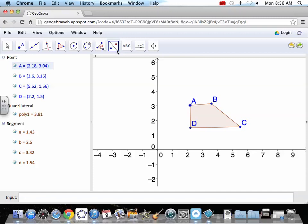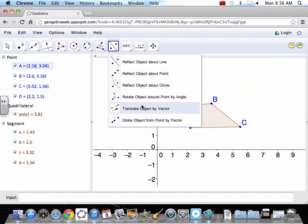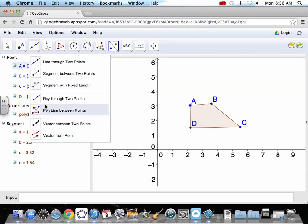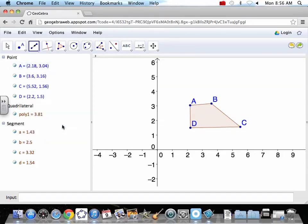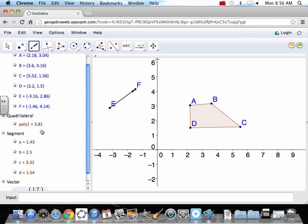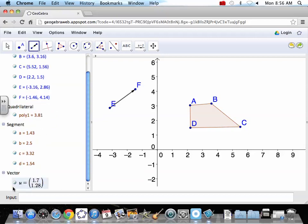Let's start with a polygon and let's do translation. Translate object by vector - obviously we need a vector. Let's go back to our line tools and let's draw a vector. It says vector between two points, so apparently we need two points. Point E, point F, and here is our vector.